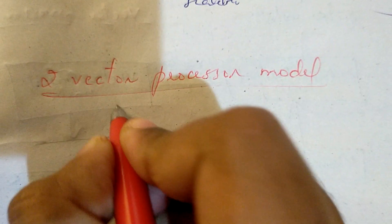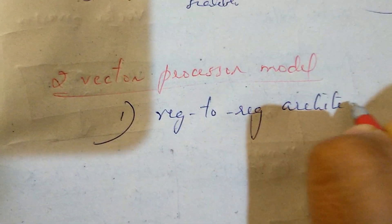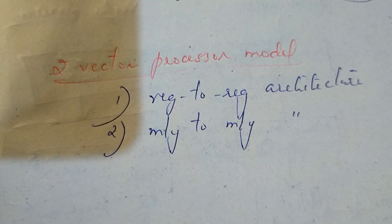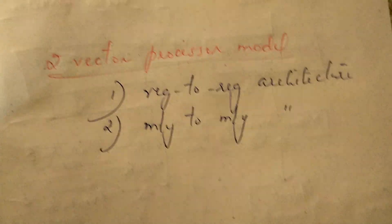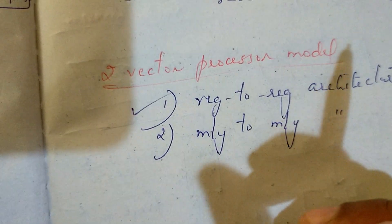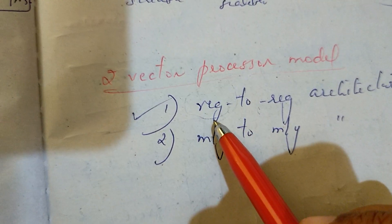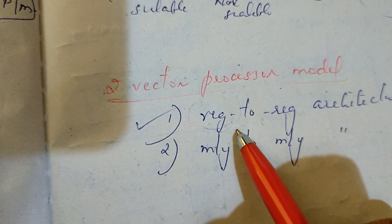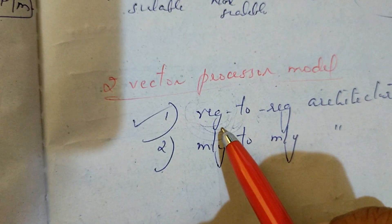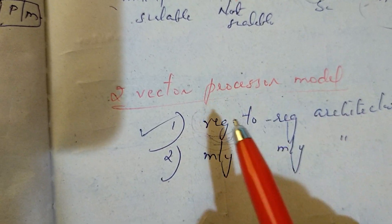Now I will step inside the detail of the Vector Control Unit. First, we will go to register-to-register architecture. Here we have vector registers and vector operands. In the register-to-register architecture, vector registers and vector operands store the intermediate and final results.